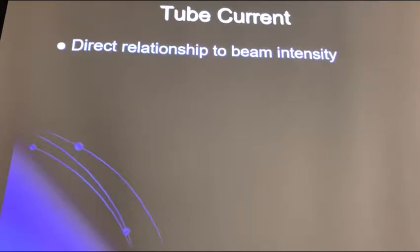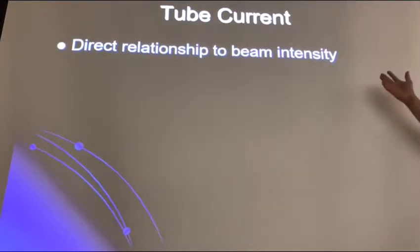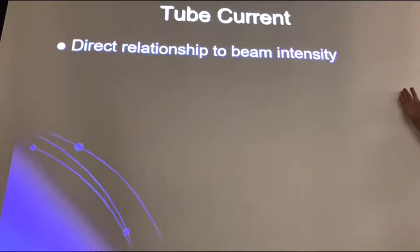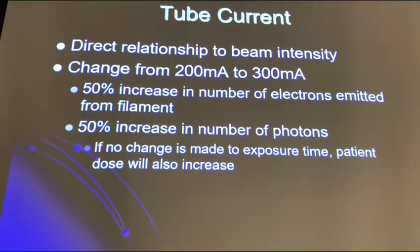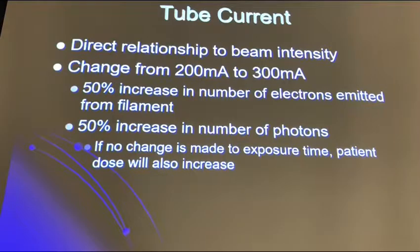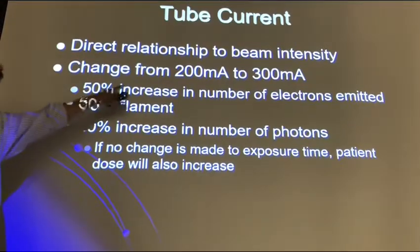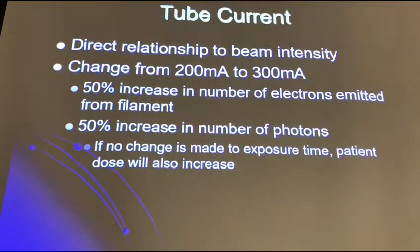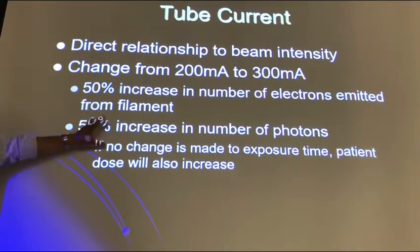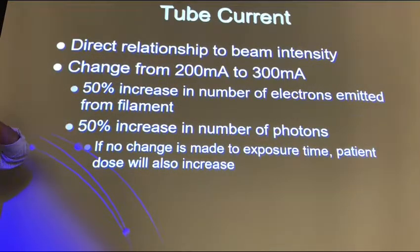There is a direct relationship of MA to beam intensity, and also a direct relationship to patient dose. If you change from a 200 mA station to a 300 mA station, you're increasing the number of electrons by 50%. If you go to 400 mA, it's a 100% increase — and 50% more photons means patient dose goes up by 50%.